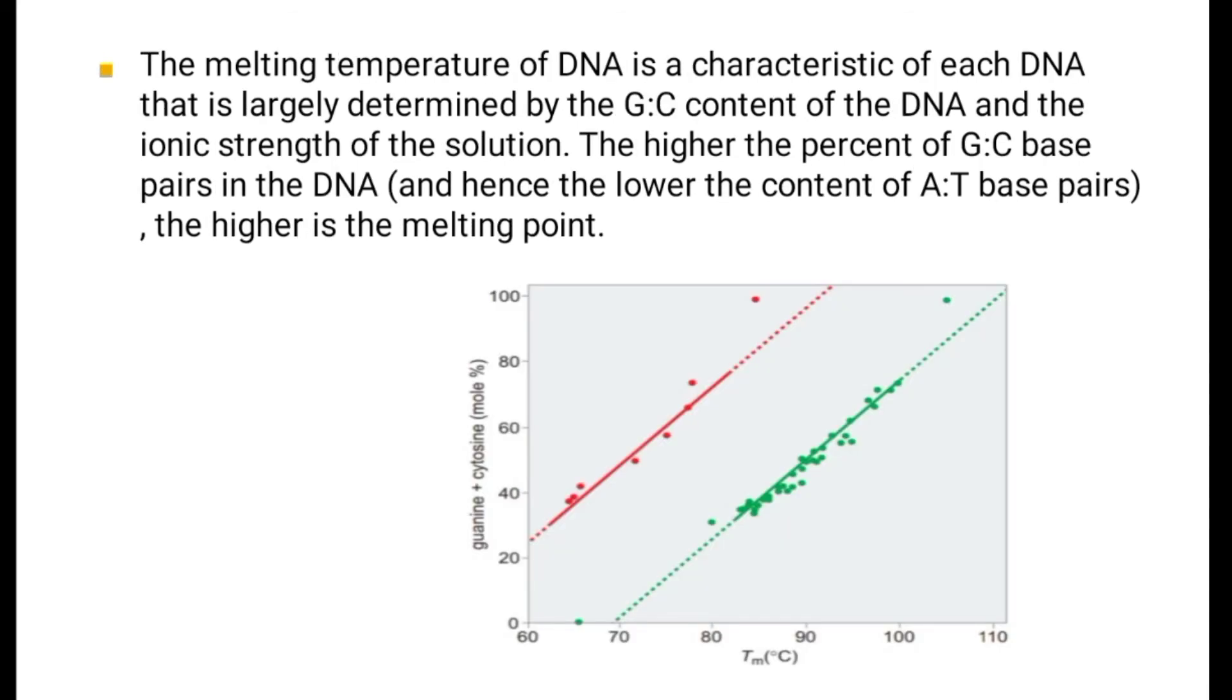The melting temperature of DNA is a characteristic of each DNA that is largely determined by the G-C content of the DNA and the ionic strength of the solution. The higher the percent of G-C base pairs in the DNA and hence the lower the content of A-T base pairs, the higher is the melting point.